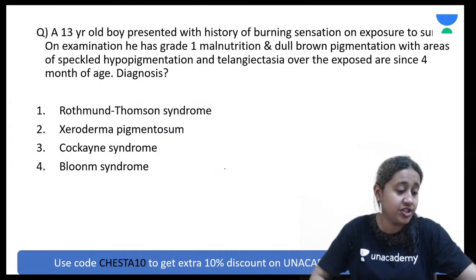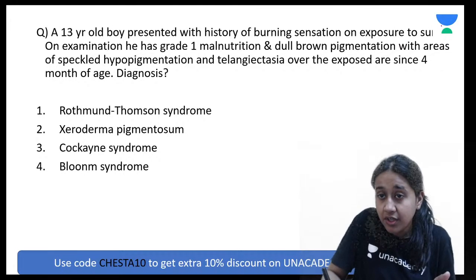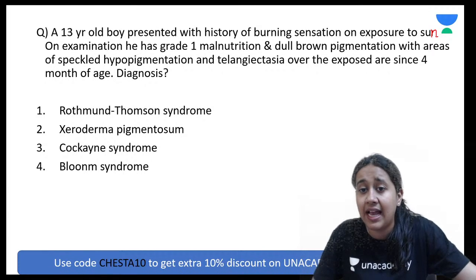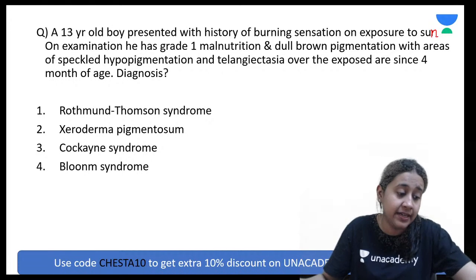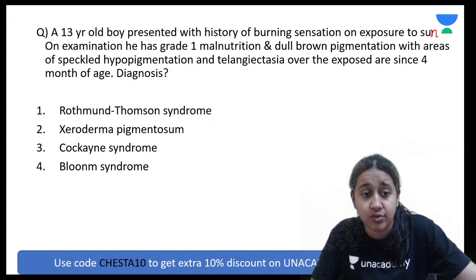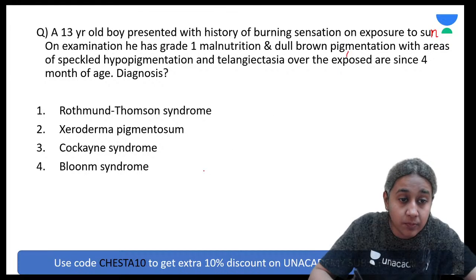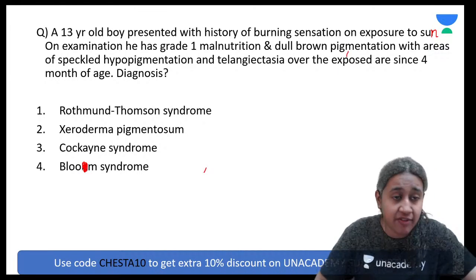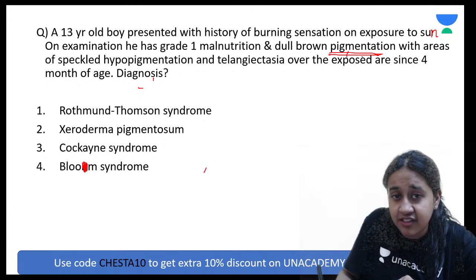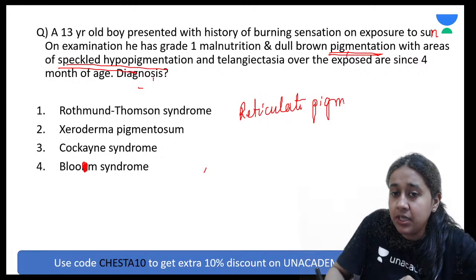Next question: A 13-year-old boy with a history of burning sensation on sun exposure, grade one malnutrition, and dull brown pigmentation with areas of speckled hypopigmentation over exposed parts for four months. Options: Rothman-Thomson syndrome, Xeroderma pigmentosum, Cockayne syndrome, or Bloom syndrome.